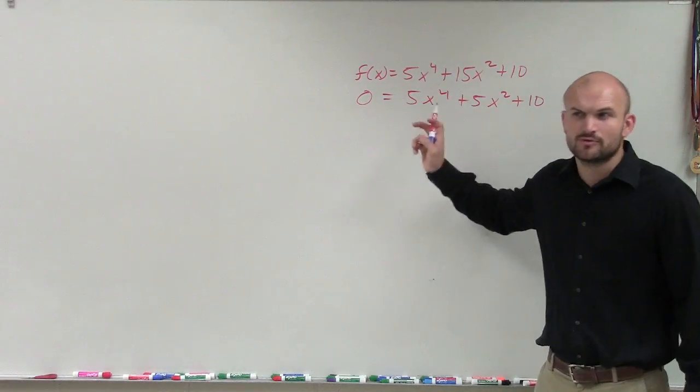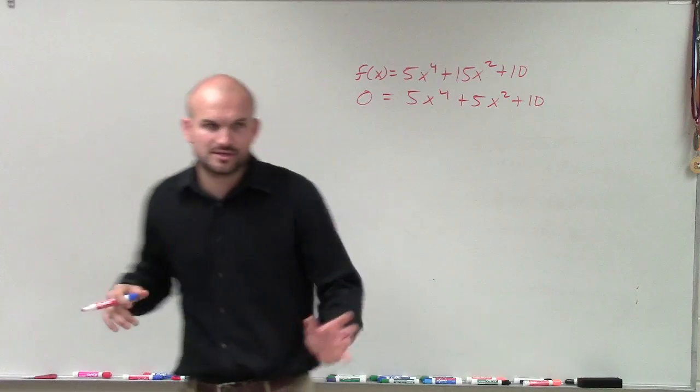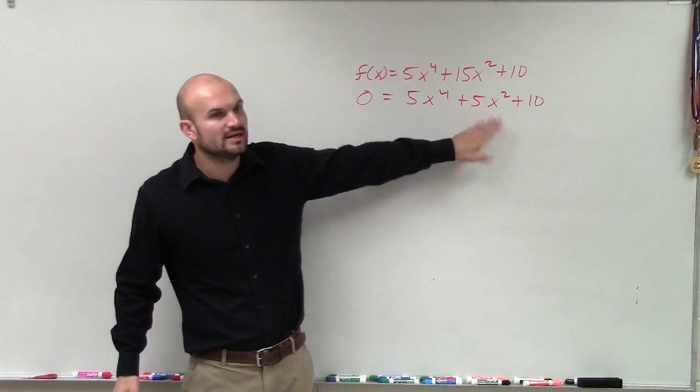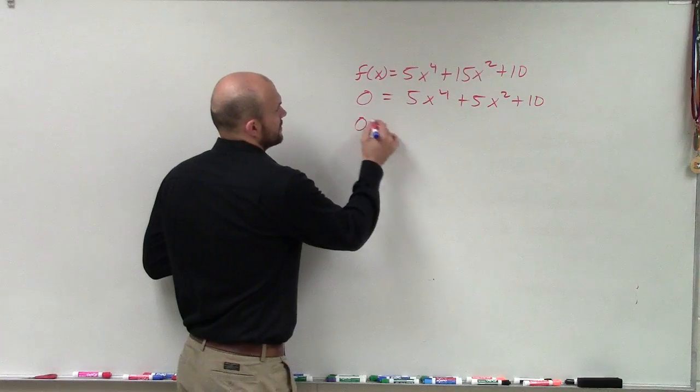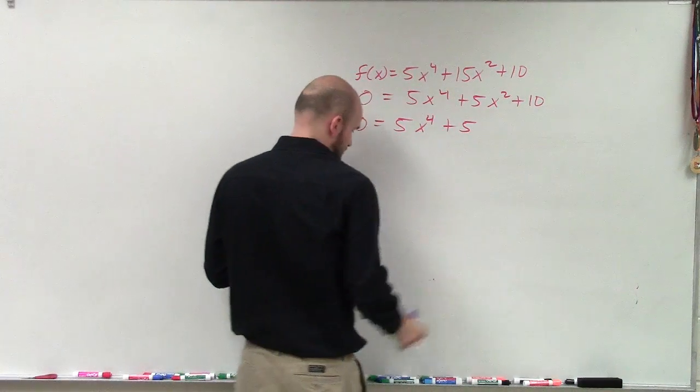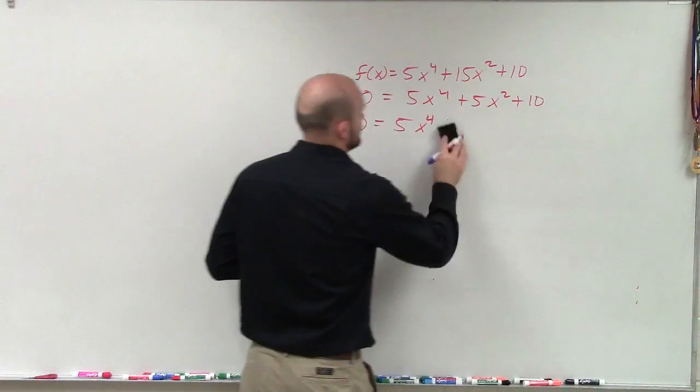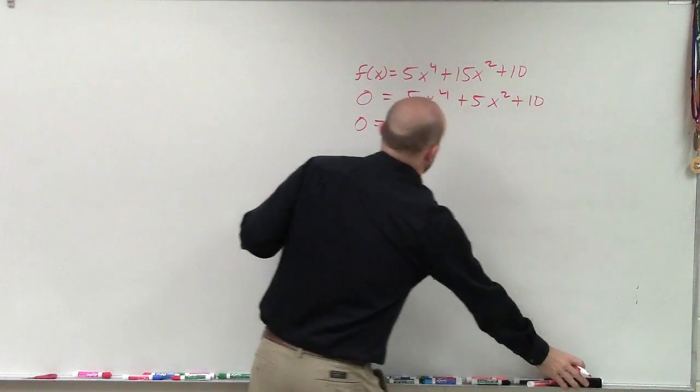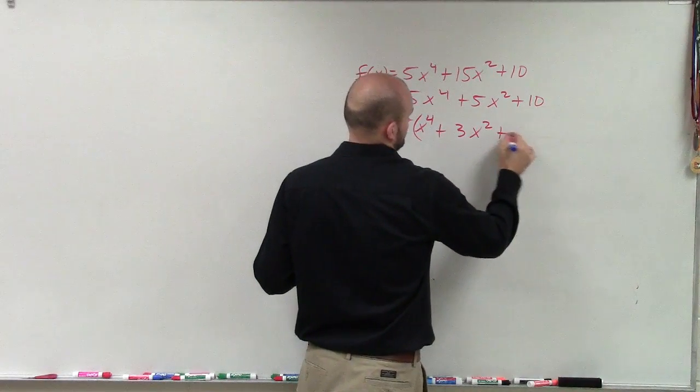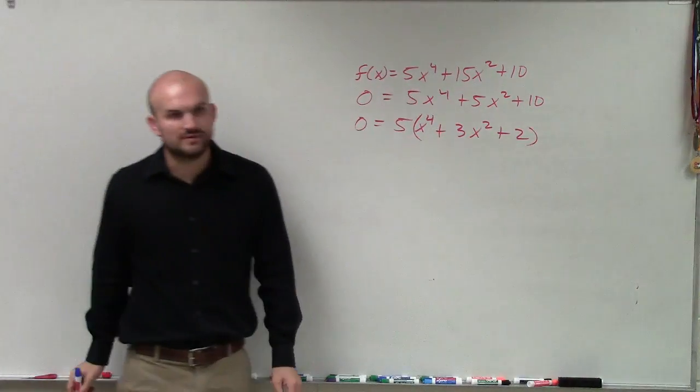Some of you went to factoring by grouping, and I'm not sure where. I think it was just maybe because there's so many x squareds and stuff, you might have got confused, but all we need to do is factor out a five. If I factor out a five, you guys are left with that.